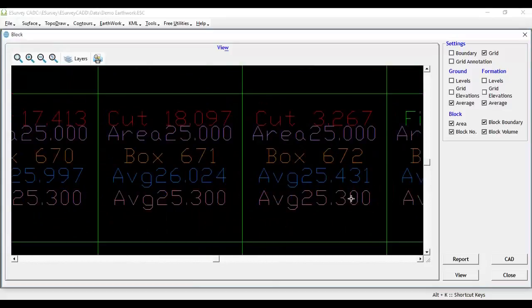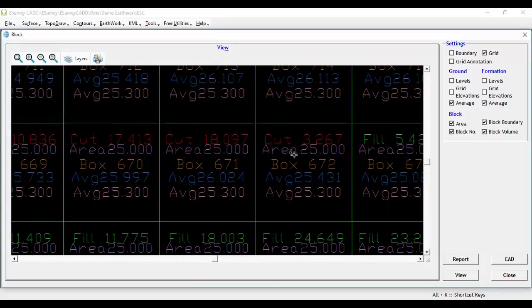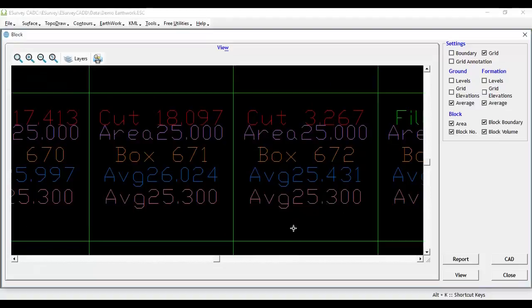The software finds the average of base surface levels and comparative surface levels, then multiplies the difference in averages with the area of that particular block to derive the volume. By clicking on the report button, an Excel sheet with computation details will be generated.